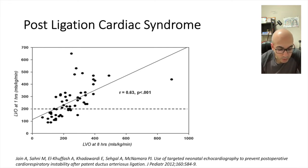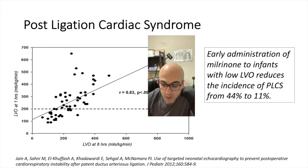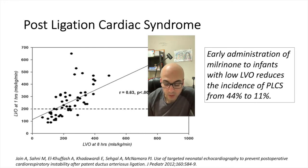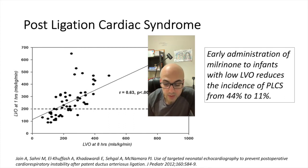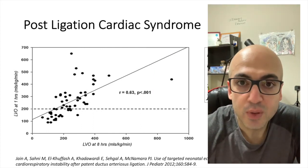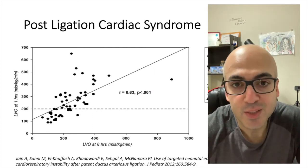Typically, you need to monitor cardiac output very closely early on after PDA ligation. It was found that administration of milrinone to infants with low left ventricular output early on after ligation reduces the incidence of PLCS from 44% down to 11%.